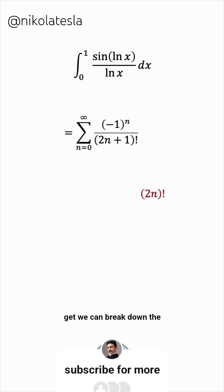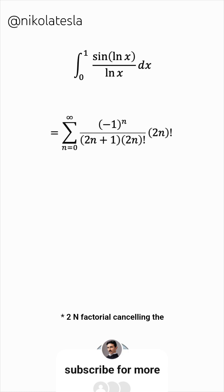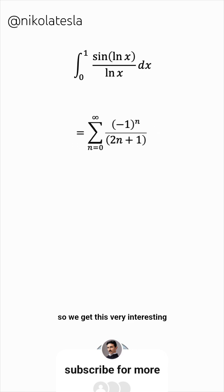We can break down the denominator into 2n plus 1 times 2n factorial, cancelling the 2n factorial on the top. So we get this very interesting alternating series: the sum of the reciprocals of odd numbers.